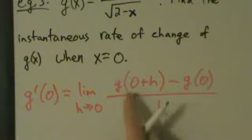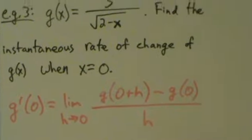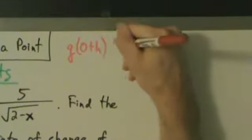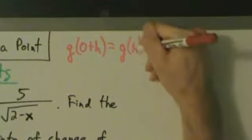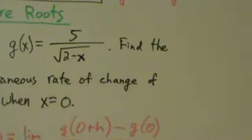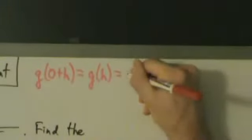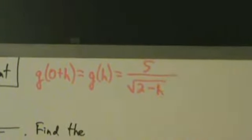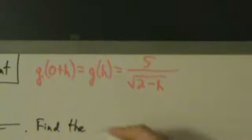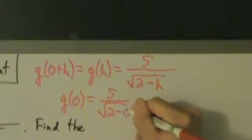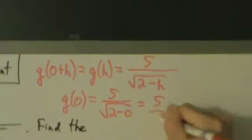So now we just have to figure out what is g of 0 plus h and what is g of 0. So g of 0 plus h, which is the same thing as g of h — since g of x is 5 divided by the square root of 2 minus x — g of h is just 5 divided by the square root of 2 minus h. Just instead of x, we have an h. And then g of 0 equals 5 divided by the square root of 2 minus 0, which is just 5 over root 2.